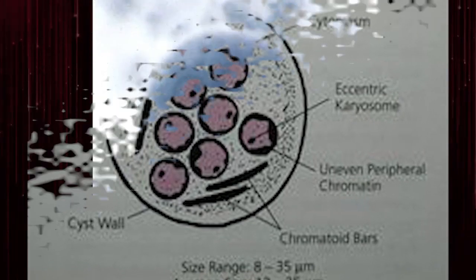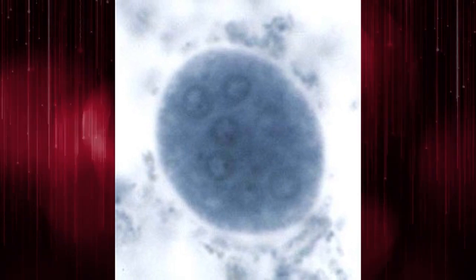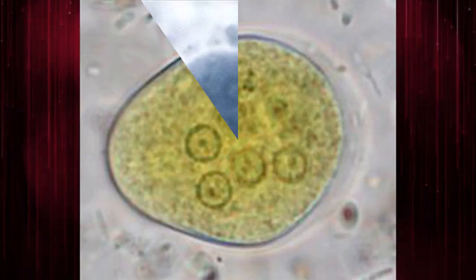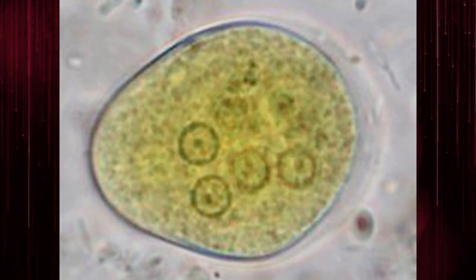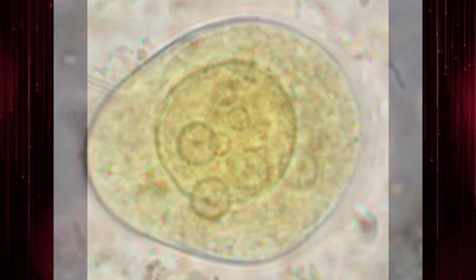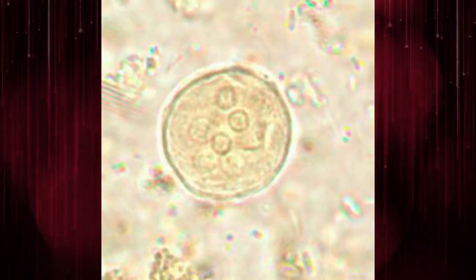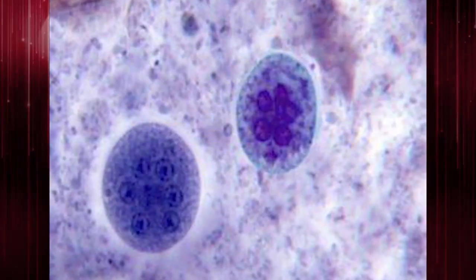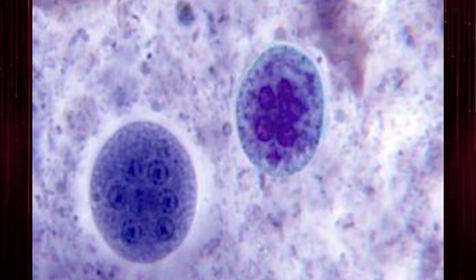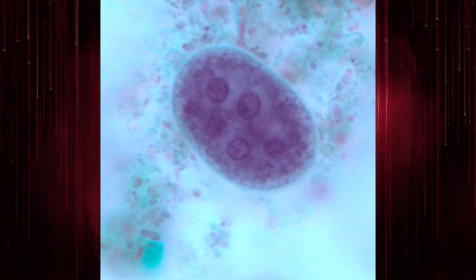Entamoeba coli is the only species in the genus encountered in humans with more than 4 nuclei in the cyst stage. The nuclei may be seen in unstained as well as stained specimens. Mature cysts typically have 8 nuclei, but may have as many as 16 or more.